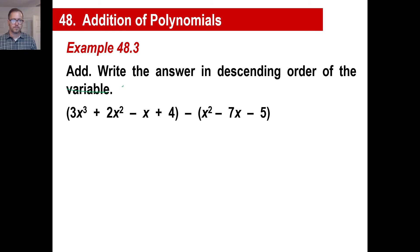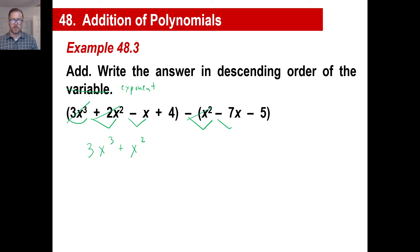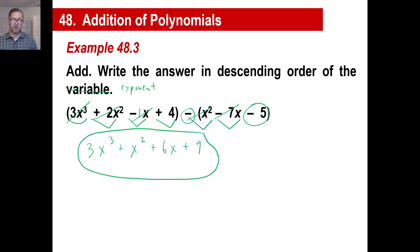Here's another one — go ahead and pause it and see if you can get this. If you notice, there's only 1x to the third power, so that would be 3x to the third power. I've got x squared here and x squared here: positive 2 and negative 1 gives us positive x squared. Then for the x to the first power terms: minus a negative, which means the opposite of a negative is positive 7. So negative 1 and positive 7 gives us 6x. Then positive 4 and the opposite of negative 5 gives another positive 5, which means it's going to be 9. The degree of the polynomial is again 3.